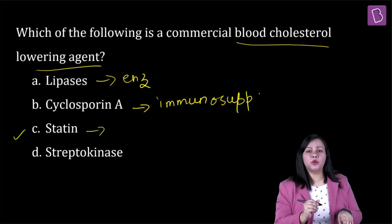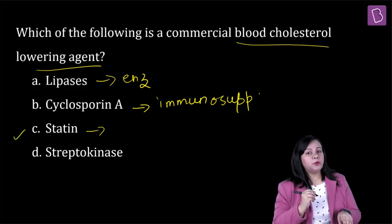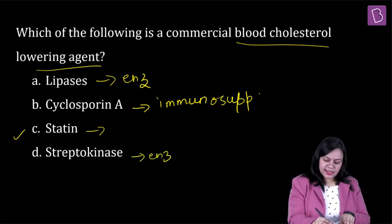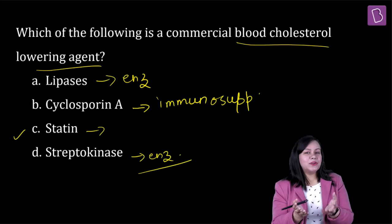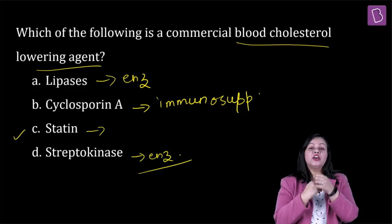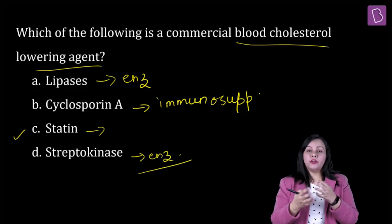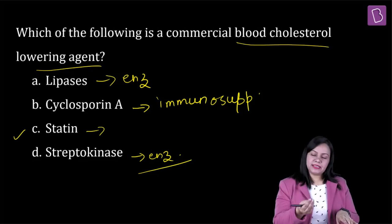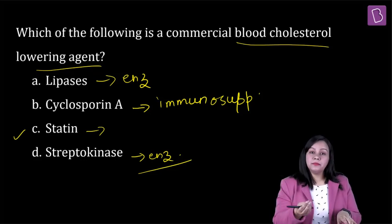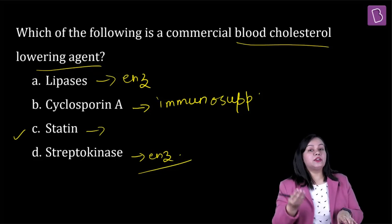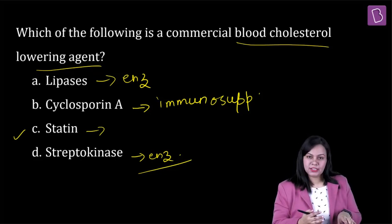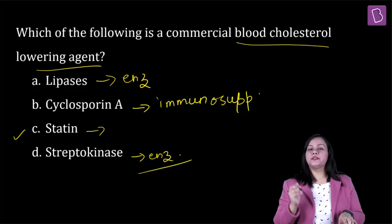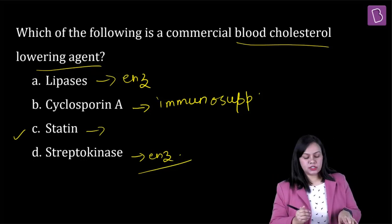Let's still talk about streptokinase, which is option D. What is streptokinase? Streptokinase is basically an enzyme which dissolves the clot. It has fibrinolytic activity. Fibrinolytic activity refers to enzymes which have the capacity to break down the clots. So this is all about the options and you have definitely understood the right answer.